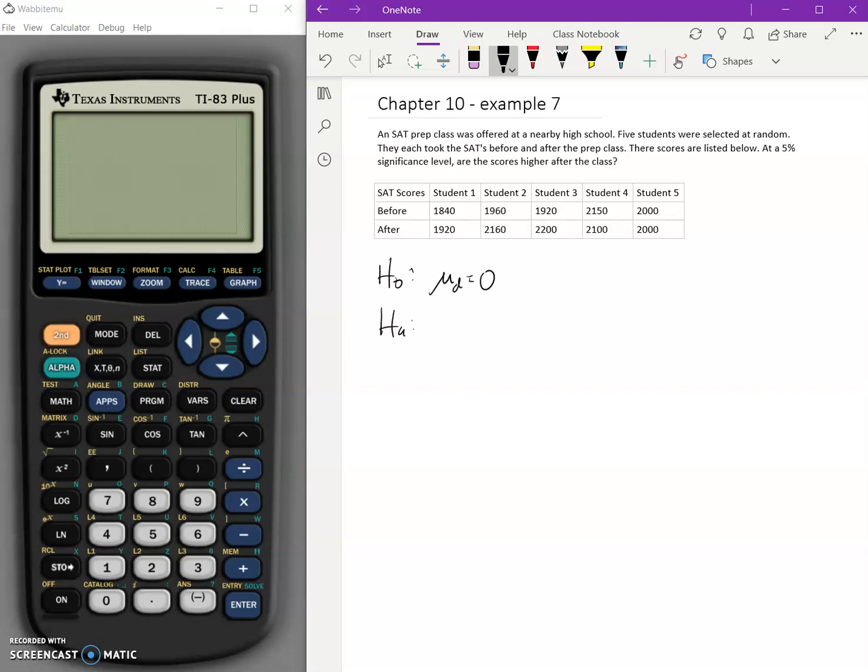The alternative hypothesis says, what if the scores are higher after the class? Remember, we define mu sub d as after minus before. We're calculating the mean of the differences, after minus before. So if after is larger than before, we expect this difference to be greater than zero.